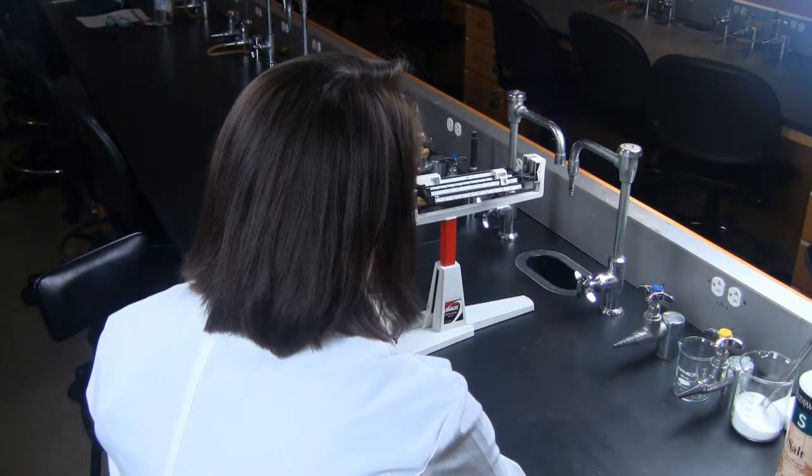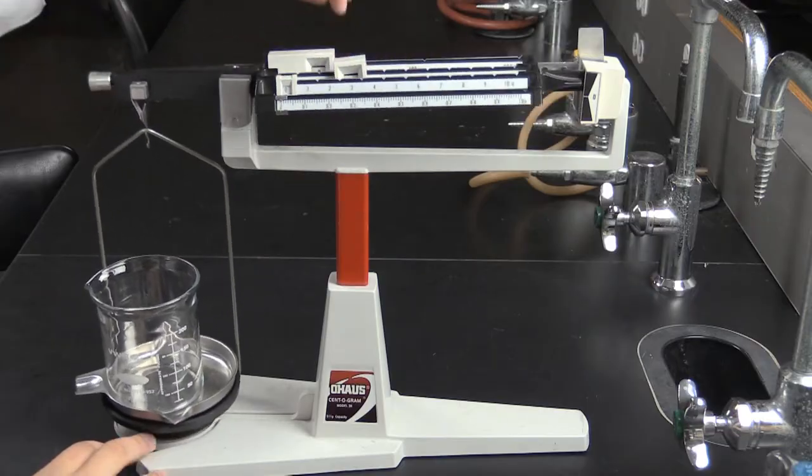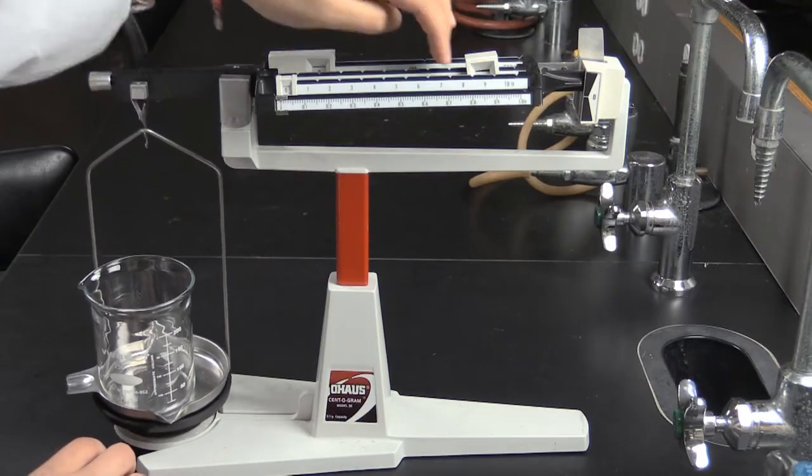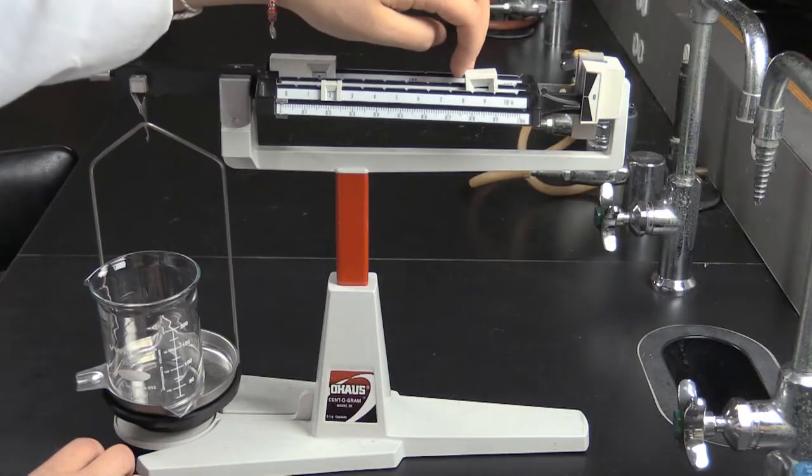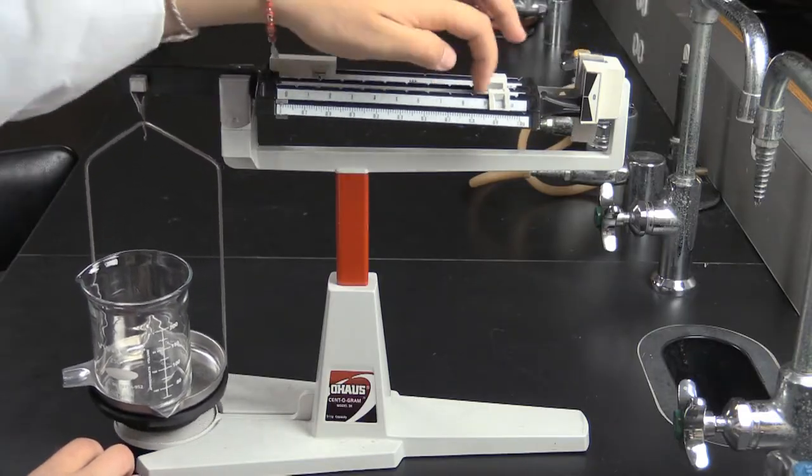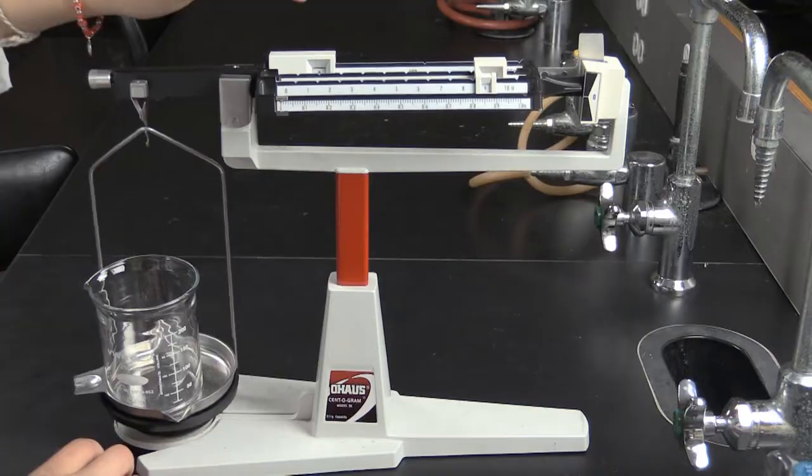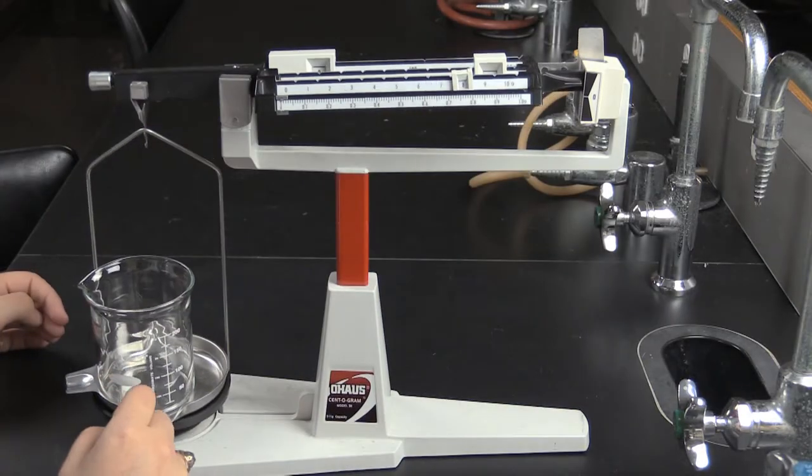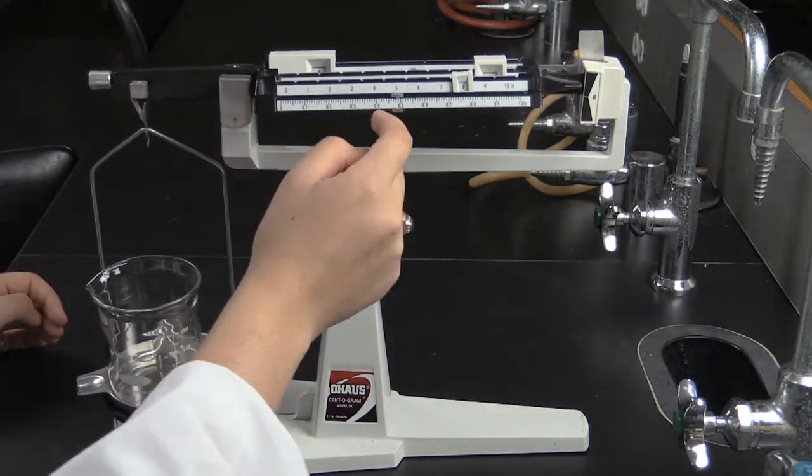Now slide the sliders back and forth until you re-establish balance. Start with the largest place value. In this case, it is the hundredths place. Move the slider until the beam goes out of balance in the opposite direction. Then move it back one slot.